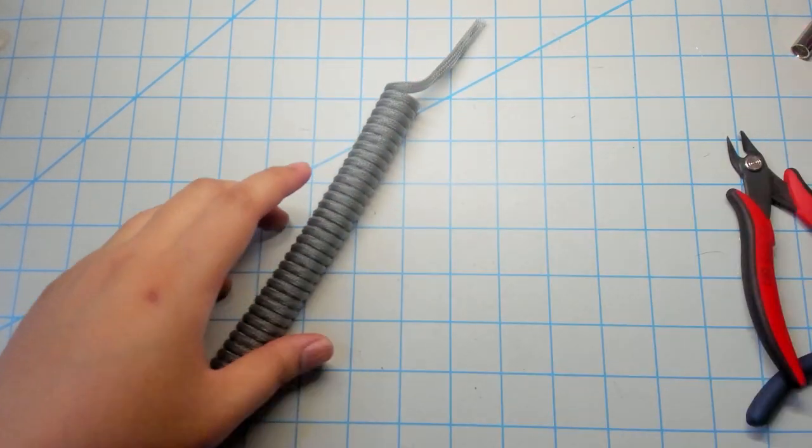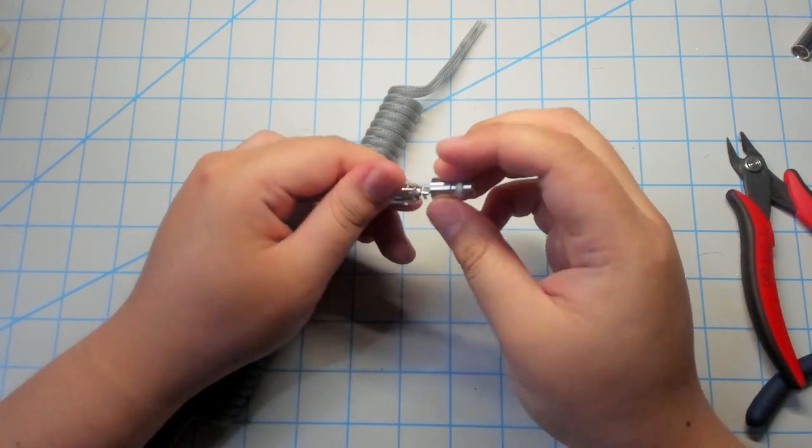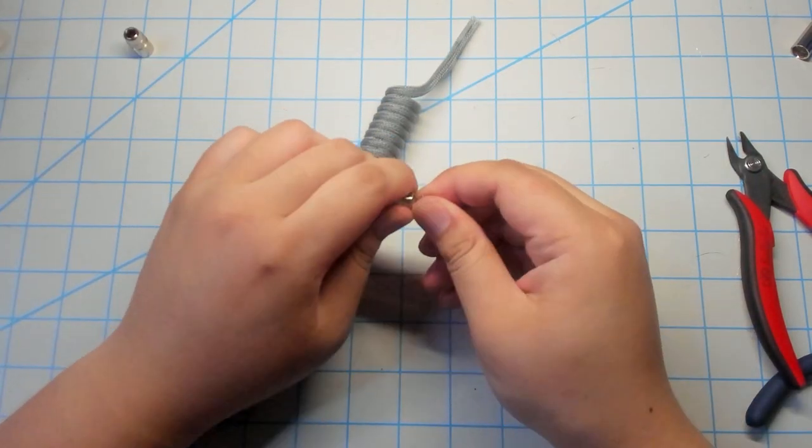Next off, I'll go ahead and prep the device end of my cable which will be the coil. The female side of the XLR connector comes apart very similarly to the male end.